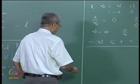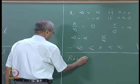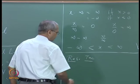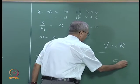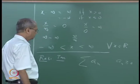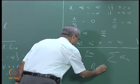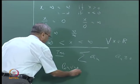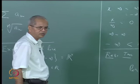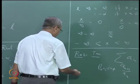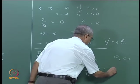Let us similarly look at another popular test, namely the ratio test. Here we are looking at the series sigma aₙ where each aₙ ≥ 0. We look at the limit superior of aₙ₊₁ / aₙ — that is why it is called the ratio test. If this limit superior is less than 1, then sigma aₙ converges.